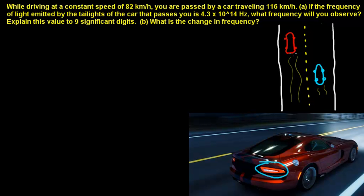You're passed by this red car who is traveling much faster at 116 km per hour. If the frequency of light emitted by the taillights of the car, right here, that passes you is 4.3 times 10 to the 14th hertz, what frequency will you observe? Explain this value to 9 significant digits. Also what is the change in frequency?